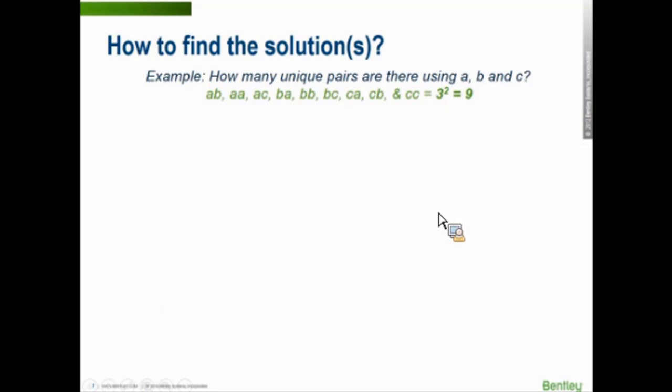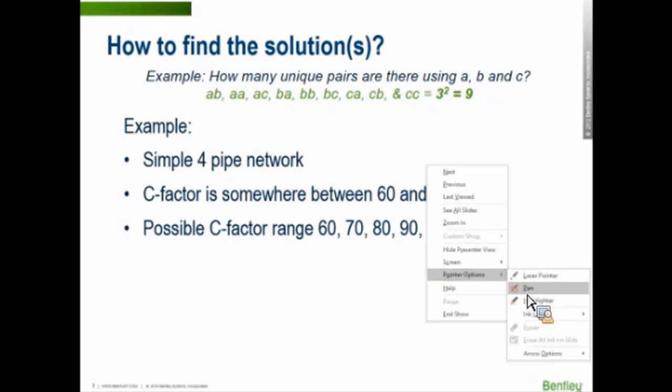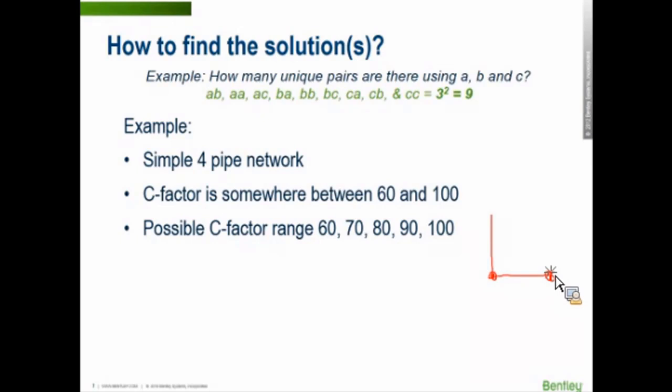Let's take a typical problem in which you're trying to find the solution of the roughness for four pipes. Choose four pipes, we're going to make it real simple. And you're pretty sure the C factors are somewhere between 60 and 100. So if we break the continuous set of possible solutions—four pipes somewhere between 60 and 100—into five discrete values: 60, 70, 80, 90, and 100. Let me make this a little bit more graphic for us. So we have one pipe, two pipes, three pipes, and four pipes. Here's our four pipes. And any of these four pipes could either be 60, 70, 80, 90, or 100.